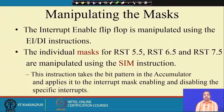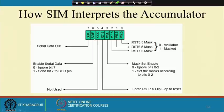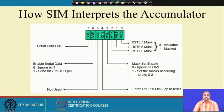Using the SIM instruction, we can manipulate the mask flip-flops. This instruction takes the bit pattern in the accumulator and applies it to enable or disable the interrupt masks, resulting in enabling and disabling of specific interrupts. First we set the accumulator to a particular bit pattern, then when SIM is executed, individual bits of the accumulator have special meaning and the flip-flops are set accordingly.